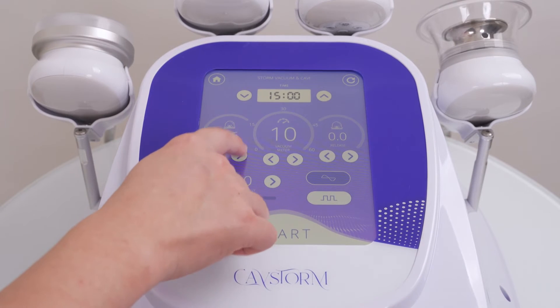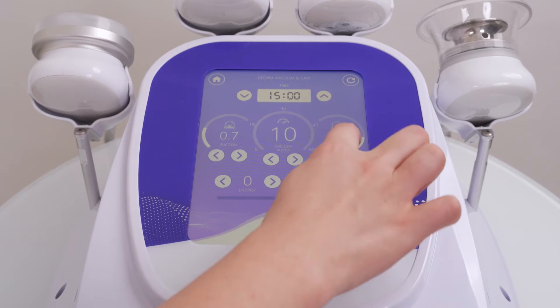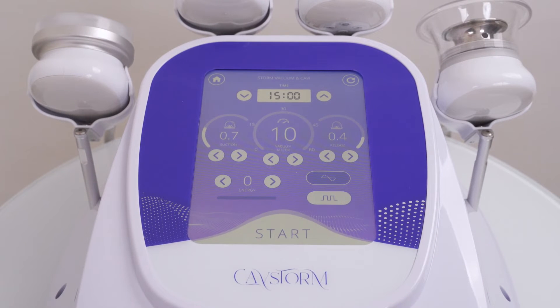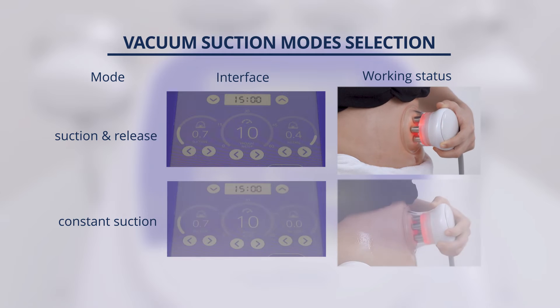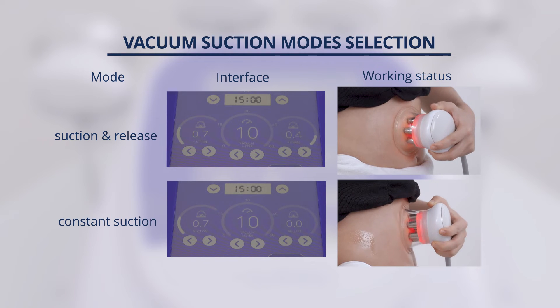For vacuum, suction time range and release time range are 0 to 2, both freely adjustable. When release time is not 0 and suction time is longer than release time, the handpiece is in suction and release mode. When release time is 0, the handpiece is in constant suction mode.